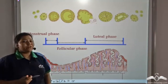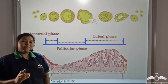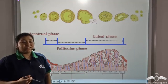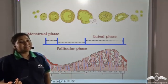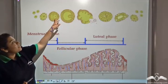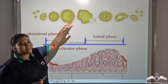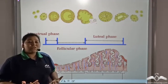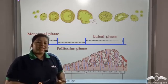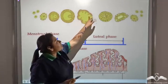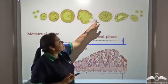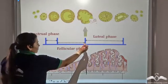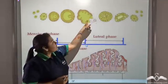During the follicular phase, primary follicles under the influence of follicle-stimulating hormone mature to form secondary follicles. The secondary follicles further mature to form the Graafian follicle, which finally ripens and matures by the fourteenth day. On the fourteenth day, the Graafian follicle ruptures to release the matured ovum — that is, ovulation occurs and the ovary releases the matured ovum.